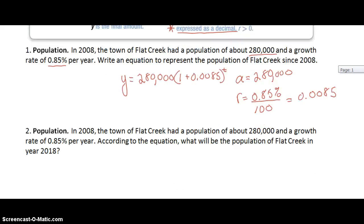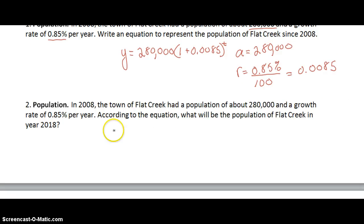Let's take a look at the next one and they'll ask what the population is after a certain number of years. In 2008 the town of Flat Creek had a population of about 280,000 and a growth rate of 0.85 percent per year. According to the equation what will be the population of Flat Creek in 2018? If you look at the numbers they've given us we have the same initial amount and the same rate so we're using the same equation. Y equals 280,000, 1 plus 0.0085.